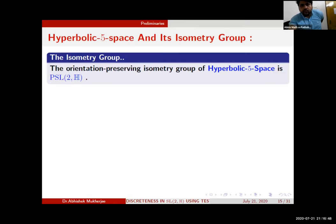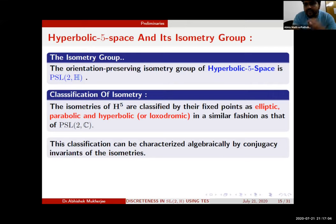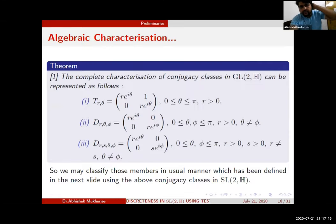As we have stated, H cap is the conformal boundary S⁴ of the hyperbolic 5-space. The action by the group SL(2,H) that acts on H cap is extended over H⁵ by Poincaré extension. The orientation-preserving isometric group of this space is PSL(2,H). Now we can classify the isometry by their fixed points as elliptic, parabolic, and hyperbolic or loxodromic in a similar fashion as that of PSL(2,C). This classification can be characterized algebraically by conjugacy invariance of the isometries. Every element in SL(2,H) is conjugate to an upper triangular matrix.